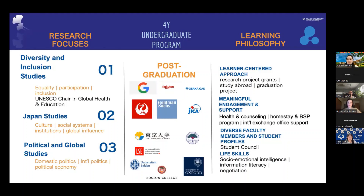The first two years are more multidisciplinary, so you will be studying all of these different disciplines at the same time. We have core subjects you have to take in political science, sociology, education, or psychology, and then in your third year you will decide where you want to focus towards graduation. The first research focus is diversity and inclusion studies, which looks at issues of equality, participation, and inclusion, and is linked to UNESCO chairing global health and education.